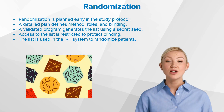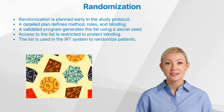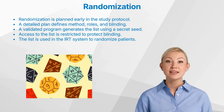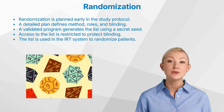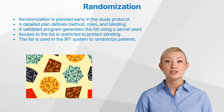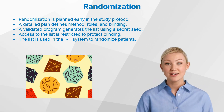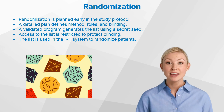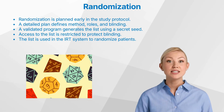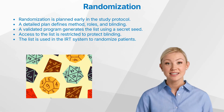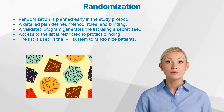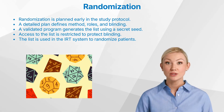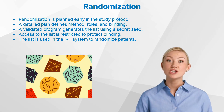Let us now move on to how randomization actually works in practice. It's a process with multiple carefully coordinated steps, and it starts early, during the protocol development phase. First, we write the protocol — the master document of the study. This is where we define all the study characteristics, including whether randomization is used and if so, how. These details include things like allocation ratios, blinding, and potential stratification, such as by site or patient subgroup.